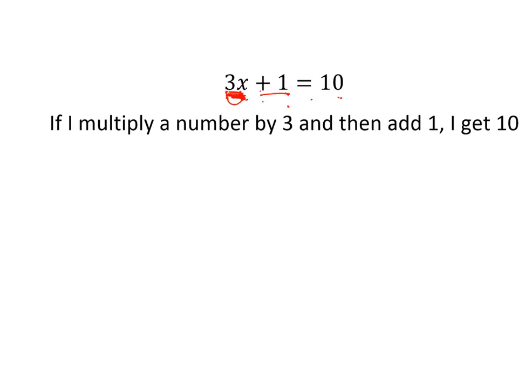And so what we're talking about is if I multiply a number by 3 and then add 1, I get 10. That's the translation and hopefully you can see quite easily that that mystery number that you're talking about will be 3 because 3 times 3 is 9 plus 1 is 10.